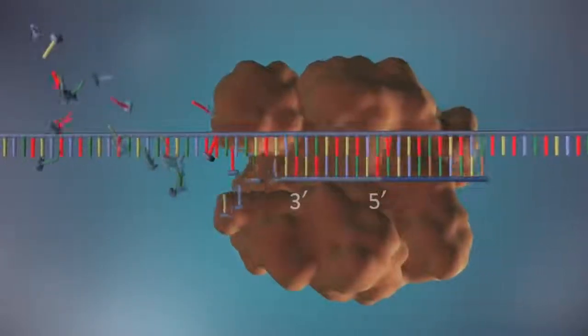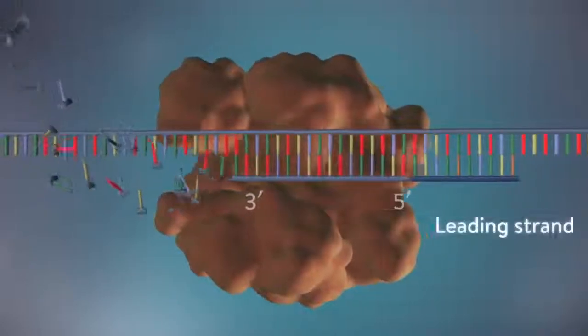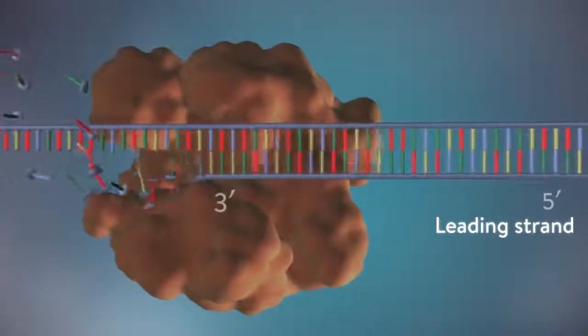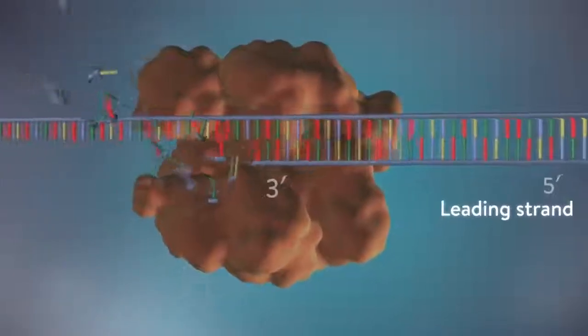One of the new strands of DNA, the leading strand, is made continuously, the DNA polymerase adding bases one by one in the five prime to three prime direction.